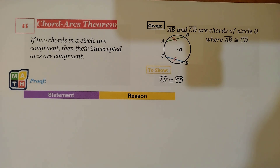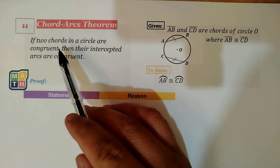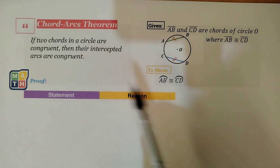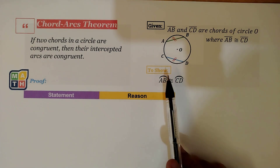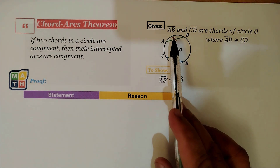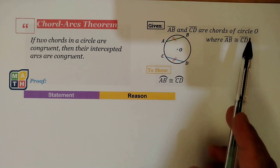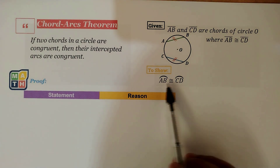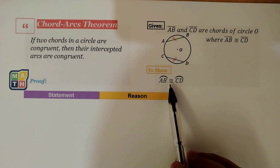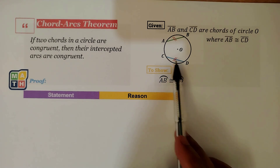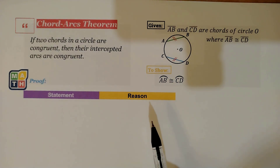This theorem is the Chord-Arcs Theorem. If two chords in a circle are congruent, then their intercepted arcs are also congruent. This is a similar illustration as the previous video, but since our focus now is on arcs, we need to show that given chord AB and chord CD are chords of circle O and are congruent to one another, the intercepted arcs — arc AB and arc CD — are also congruent to one another.